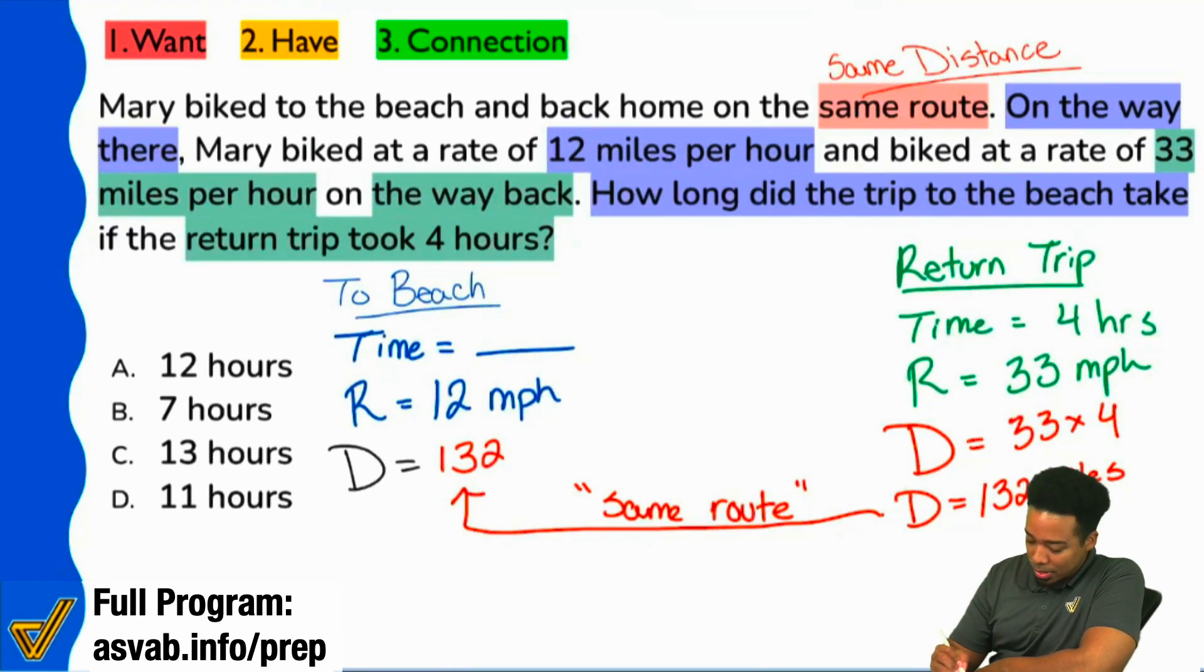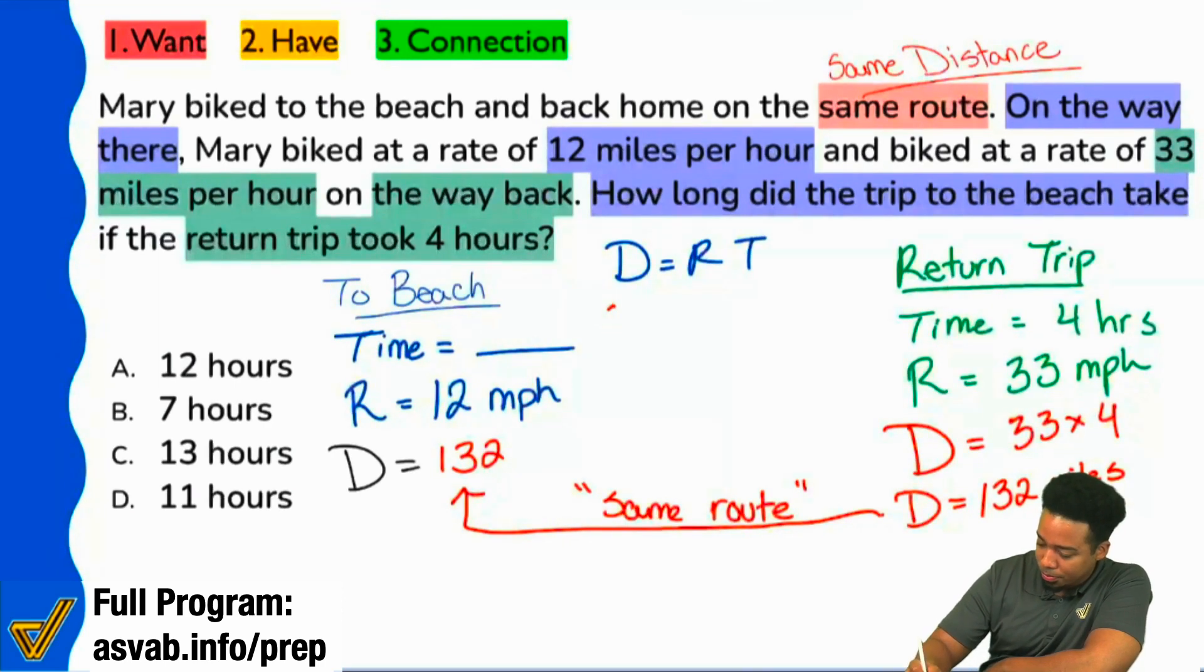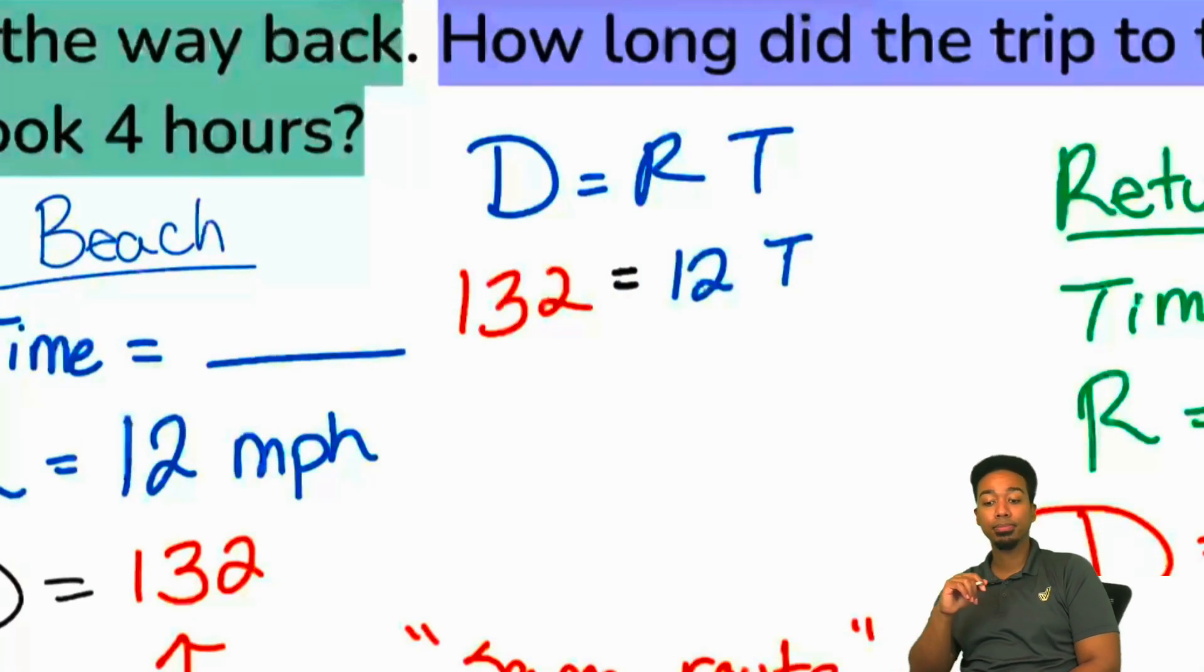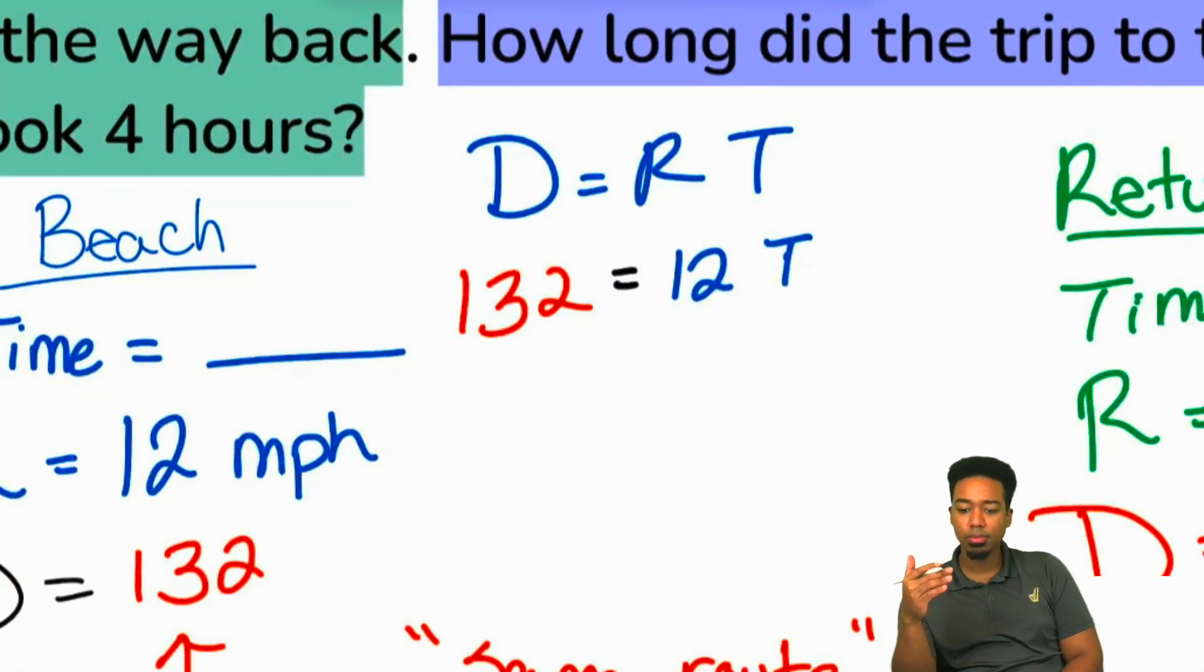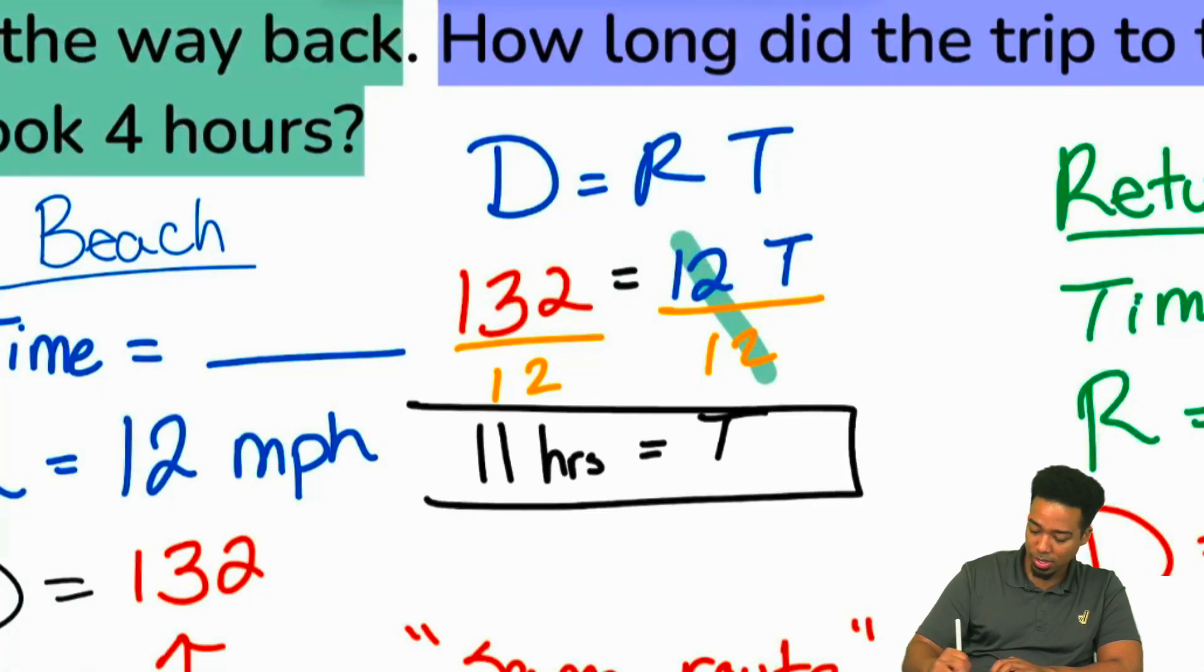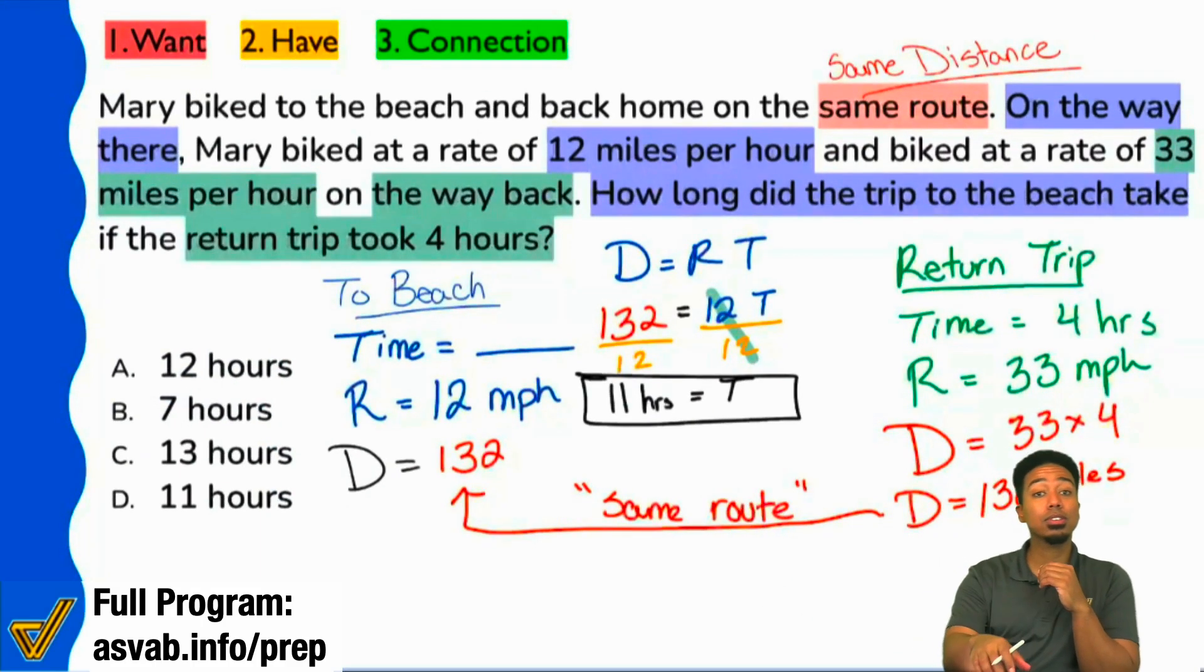And now we can use that to find the final answer because we can plug in the distance rate time right over here and we can solve. We can have 132 equals the rate 12 miles an hour multiplied by T. Everyone, what did we do to both sides to get the final answer here? Yeah, we're going to divide both sides by 12. That's right. So, we'll go ahead and do that right there. Cancels out. And we end up having the time that it took to get to the beach equals 11 hours. And there it is. Booyah. 11 hours is your answer and you're good.